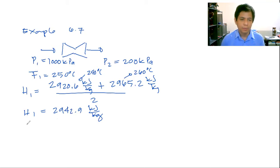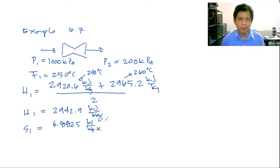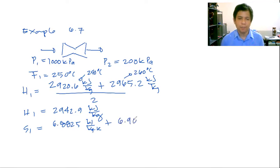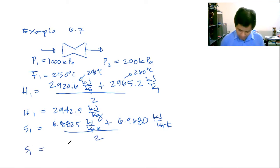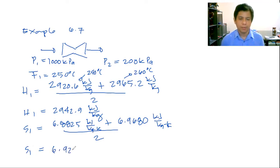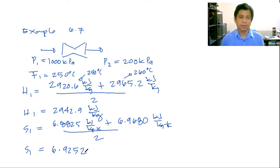For S1, similarly interpolating: S at 240°C is 6.8825 kJ/kg·K and at 260°C is 6.9680 kJ/kg·K. Dividing by 2, S1 ≈ 6.9252 kJ/kg·K. Since the process is reversible, delta S = 0, therefore S2 = S1 = 6.9252 kJ/kg·K.